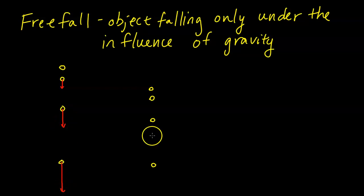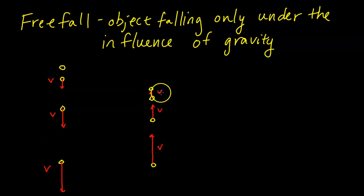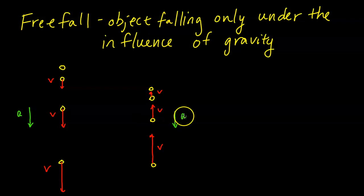If I throw a rock up, it's going to go slower and slower and slower. I'll label the velocity vectors accordingly. One key thing to understand about free fall is that the acceleration is always in the downward direction. The acceleration is constant.